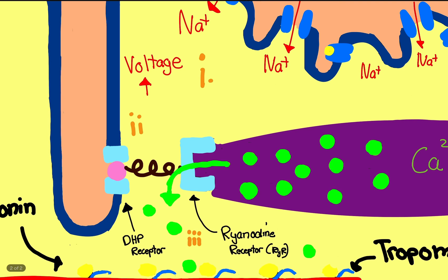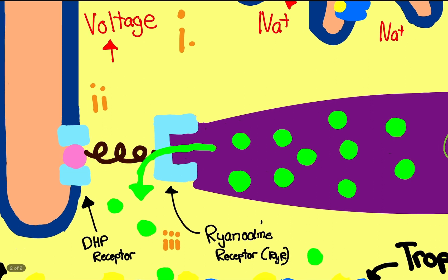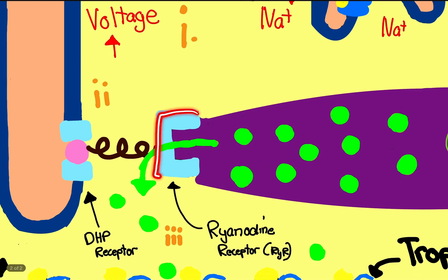Step two: in response to the voltage, there's something called a DHP receptor. The DHP receptor is very sensitive to voltage. Notice the DHP receptor has this ball-and-chain kind of deal. What actually happens is this chain is actually connected to another receptor called the ryanodine receptor, or RyR.